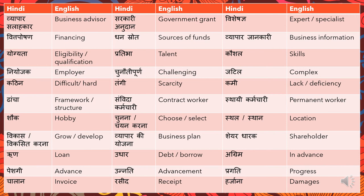'Share dharak' means 'shareholder' — for example, 'is company ke share dharak.' 'Rena' or 'udhaar' means 'loan' or 'debt' — 'aapko bazaar se udhaar lena hogi' means you have to borrow from the market. 'Agrim' means 'in advance' — so 'agrim bhugtan' is 'advance payment.' 'Peshgi' is also an advance — 'yeh peshgi rakam hai' means 'this is the advance amount.'